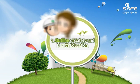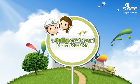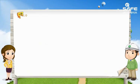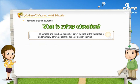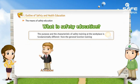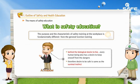One: outline of safety and health education. The purpose and characteristics of safety training at the workplace are fundamentally different from general function training. Maslow wrote that behind the biological desire to live, every human being also has a desire to keep oneself from dangers — therefore, the desire to be safe is the same as the survival instinct.